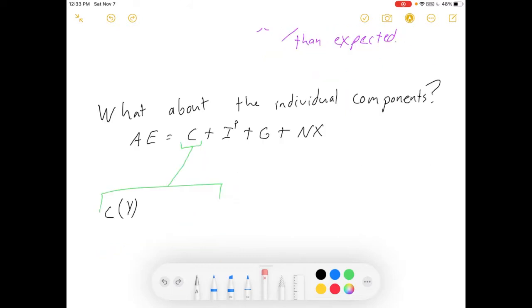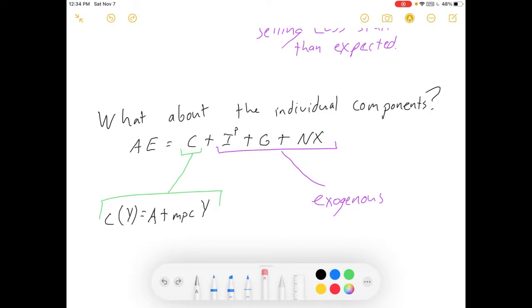C we have our consumption function, where C of Y is equal to some autonomous spending level plus your MPC times your GDP. That is an equation where depending on your value of Y you'll get a different value. Everything else though, all of these other pieces are exogenous, which means they're decided outside the model. And they are just a constant value. So we hold them constant along the AE line. Now if any of these things move, that moves the AE line. But as long as you're on the line, those are all constant. It's a lot like the idea of a supply curve or a demand curve. There are things that shift it. This is the same idea here. These are the shifters.